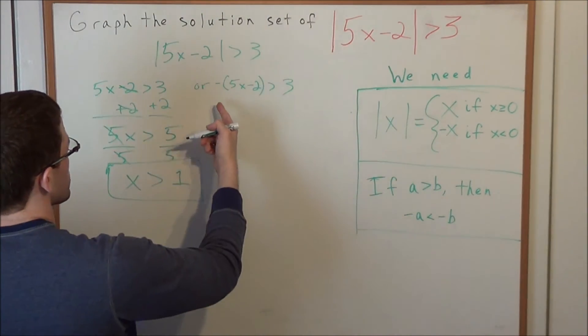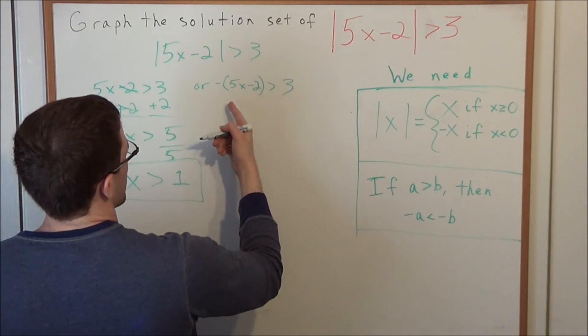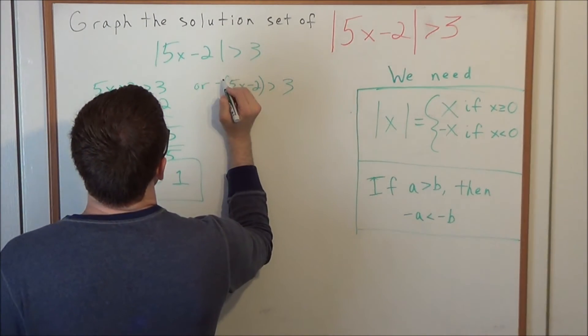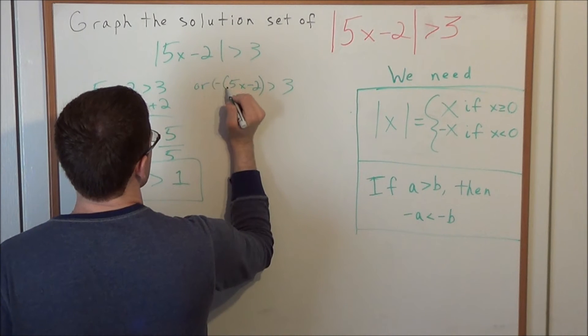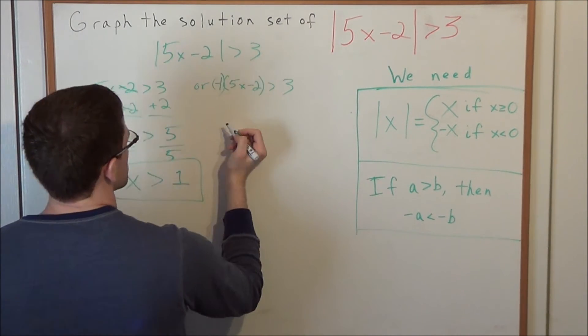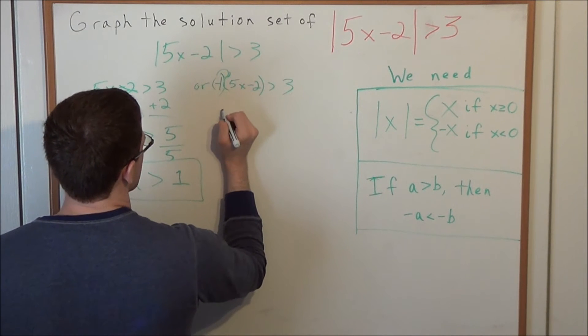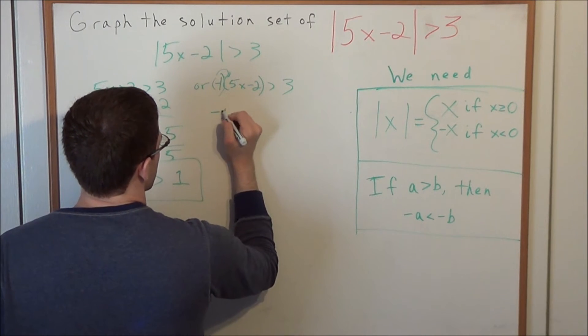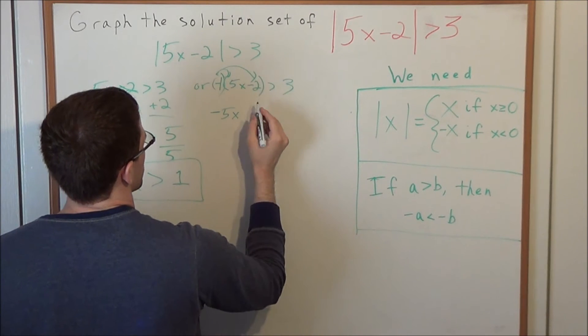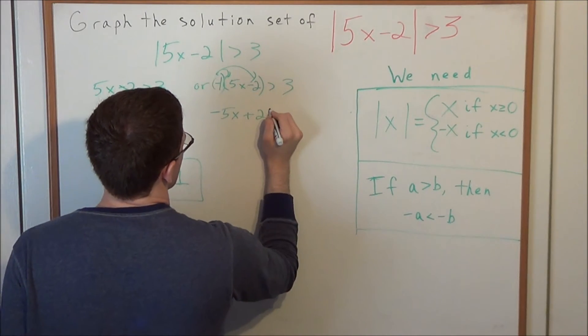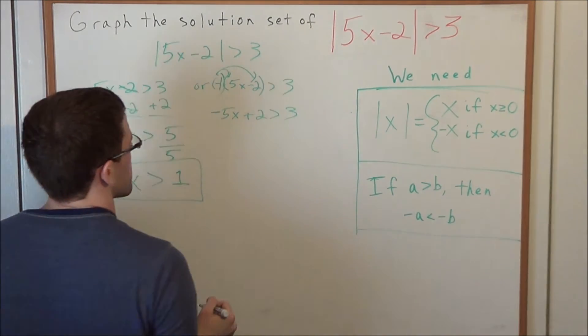Now, second, we need to evaluate negative 5x minus 2. Well, one thing we could do is distribute this negative. In some sense, there's really just a negative 1 sitting outside this parentheses. So we have negative 1 times a positive 5x is equal to a minus 5x. And we have negative 1 times a negative 2 is a positive 2. And keep in mind, this is greater than 3.